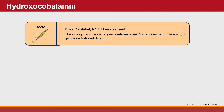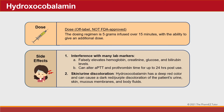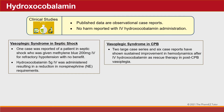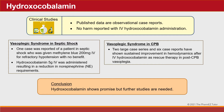The dose of hydroxycobalamin is off-label and not FDA approved. The dose is 5 grams infused over 15 minutes with the ability to give an additional dose. Hydroxycobalamin can interfere with many lab markers — it can falsely elevate hemoglobin, creatinine, glucose, and bilirubin levels, and it can alter the APTT and prothrombin time for up to 24 hours after use. It can also cause skin and urine discoloration, producing a dark red-purple discoloration of the patient's urine, skin, mucous membranes, and body fluids. Published data on hydroxycobalamin's use in shock are observational case reports. No harm has been reported with IV administration. Hydroxycobalamin shows promise, but further studies are needed.